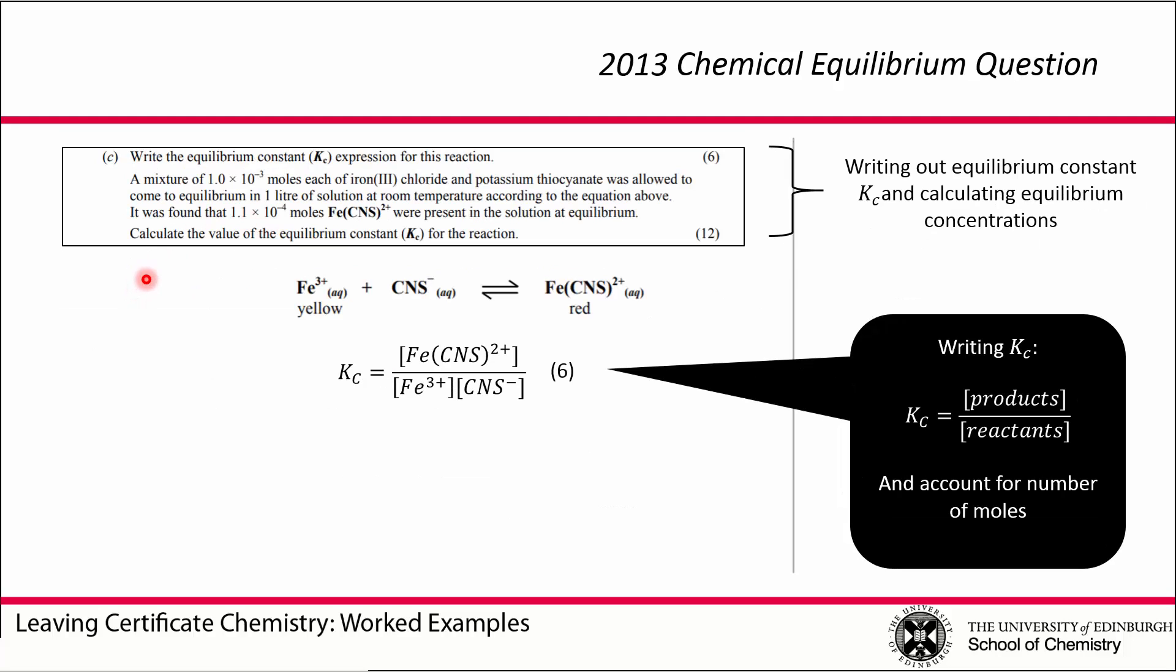Part C is asking to write the equilibrium constant, Kc, for this reaction. The equilibrium constant is given by the general expression: concentration of products over reactants, accounting for the number of moles of each. So we've got concentration of products, iron thiocyanate, divided by concentration of reactants, Fe3+ times CNS minus. An easy six marks.